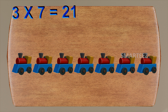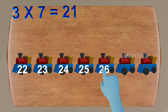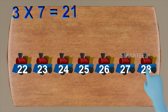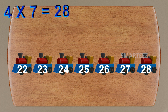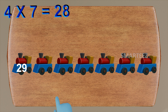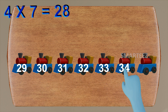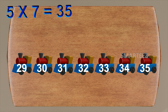Let's add the fourth set of seven toy trains. Then we'll start counting after twenty-one: twenty-two, twenty-three, twenty-four, twenty-five, twenty-six, twenty-seven and twenty-eight. For the fourth set of seven, we can write it as four times seven is twenty-eight. Let's add the fifth set of seven toy trains. Then we'll start counting after twenty-eight: twenty-nine, thirty, thirty-one, thirty-two, thirty-three, thirty-four and thirty-five. For the fifth set of seven, we can write it as five times seven is thirty-five.